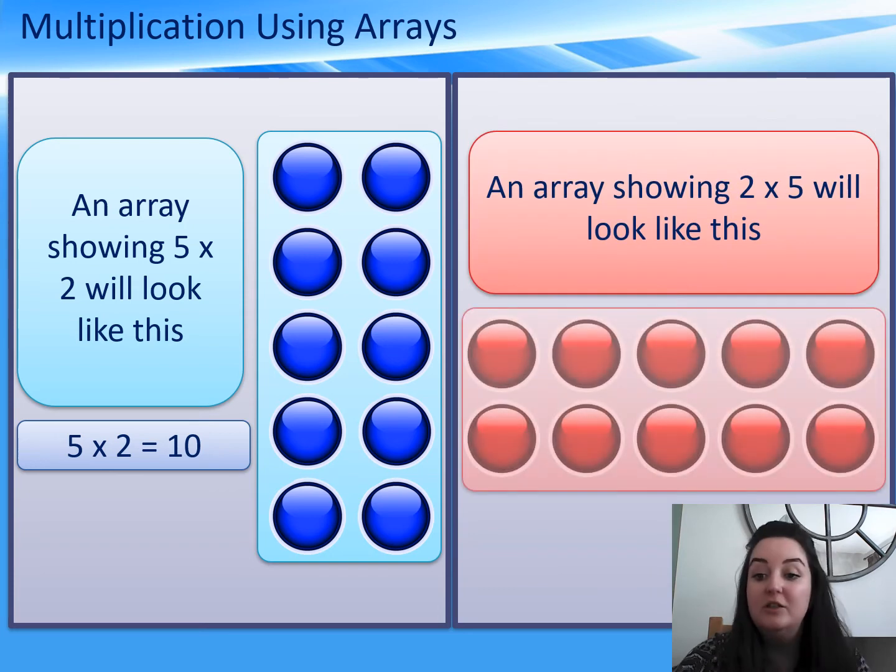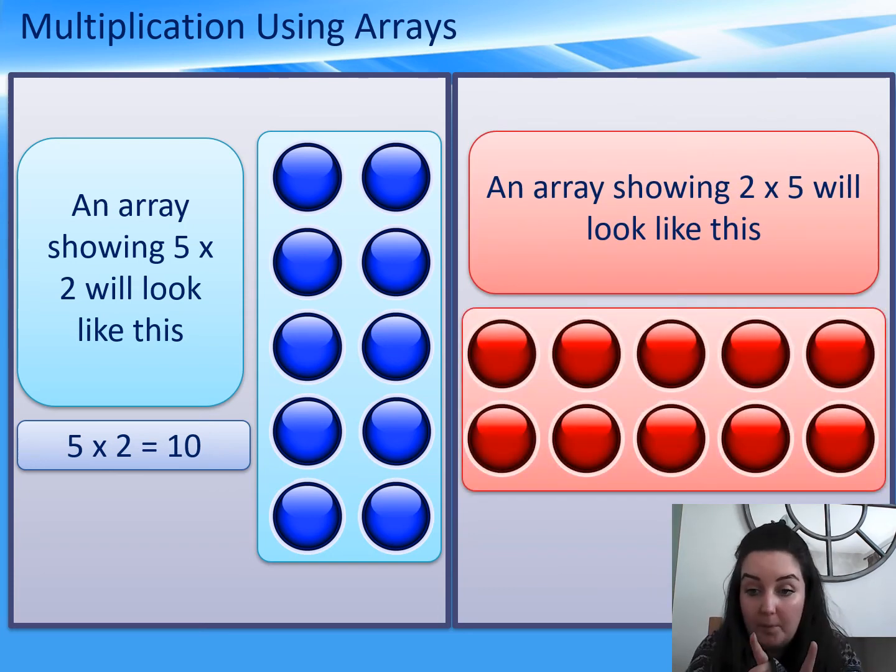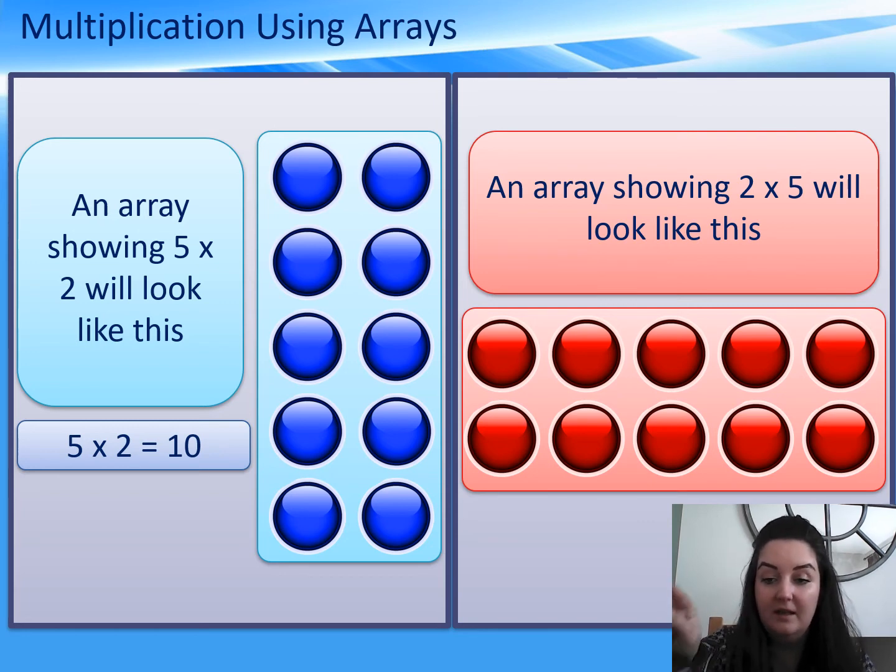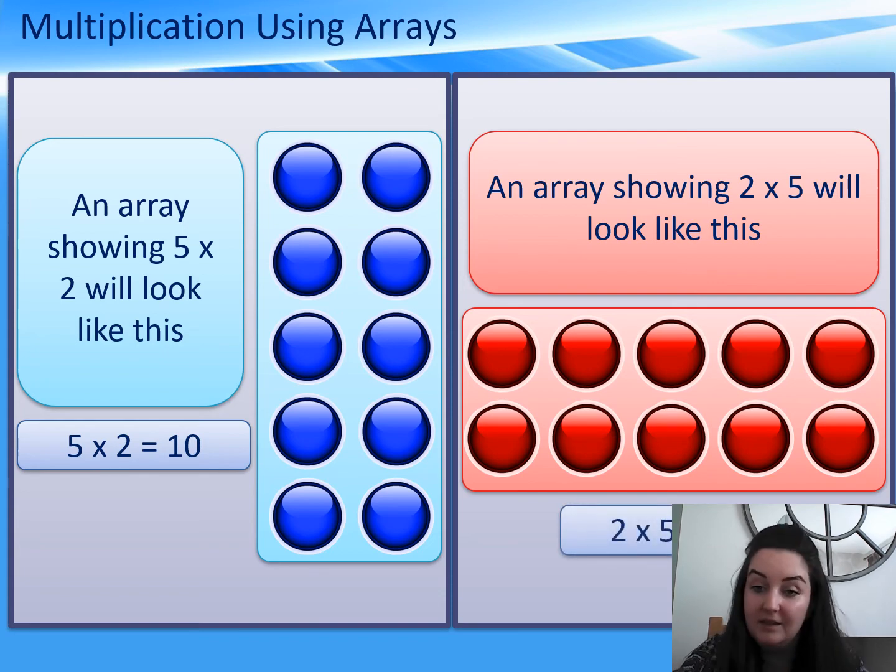But an array showing 2 times 5, so swapping those numbers round, so instead of 5 times 2, 2 times 5, would look like this. The rows, so there are 2 equal groups, and they've got 5 in each group, 2 lots of 5. And both answers are 10.